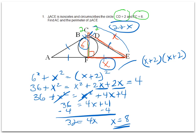We're not asked to solve for X here. We're asked to find AC and the perimeter of triangle ACE, so this is where we're going to use X equals 8 and fill in the missing values to answer the questions.